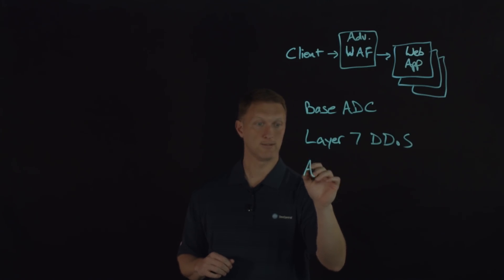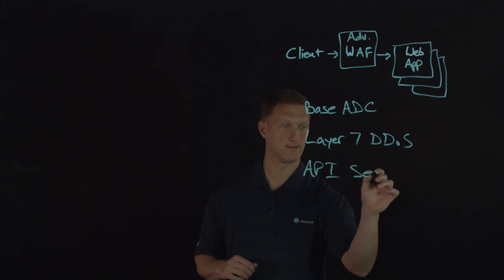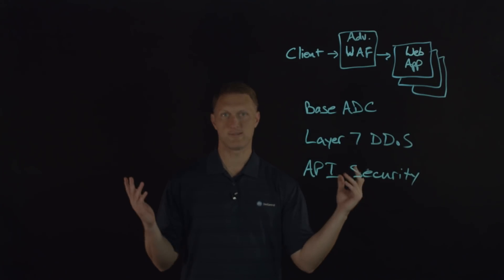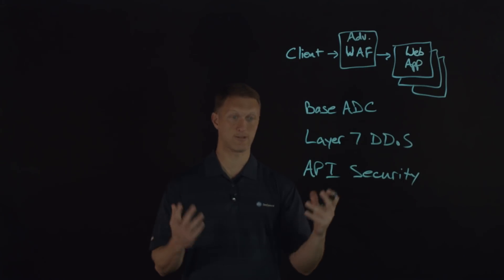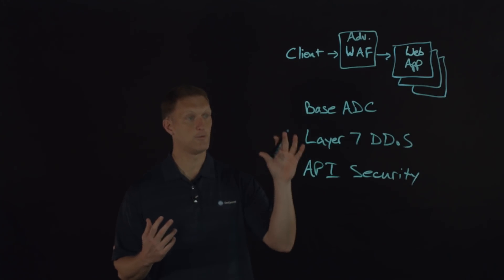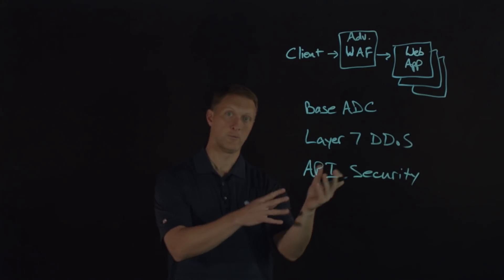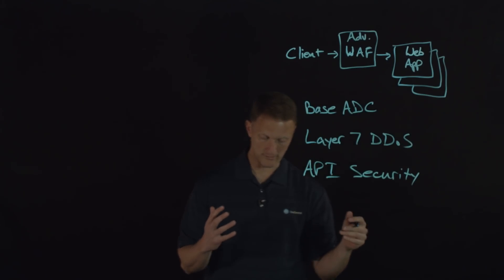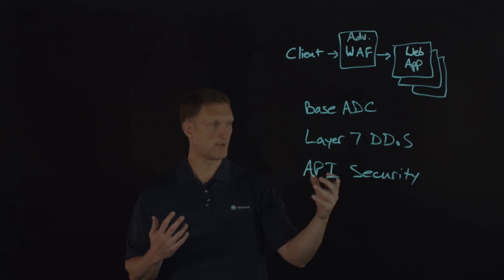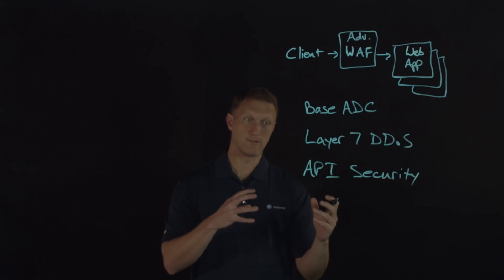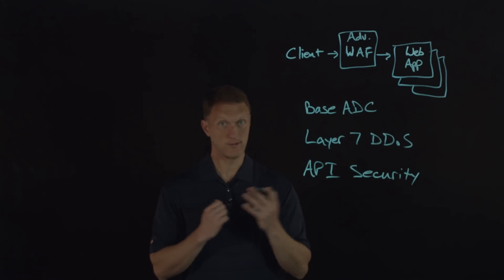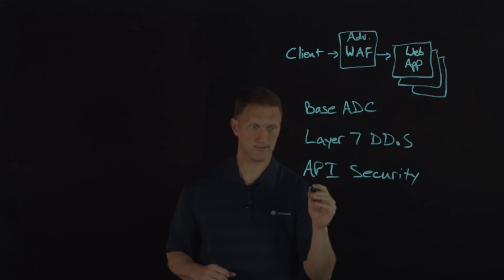Another cool feature is API security. API security is really important these days — everybody has an API for everything, and APIs can be just as vulnerable as anything else to attacks and security risks. We do some very specific things on our Advanced WAF with respect to API security: format validation for API calls, schema validation, protection at a parser level, and HTTP method configuration. These are things you can configure on the Advanced WAF to keep your APIs secure.